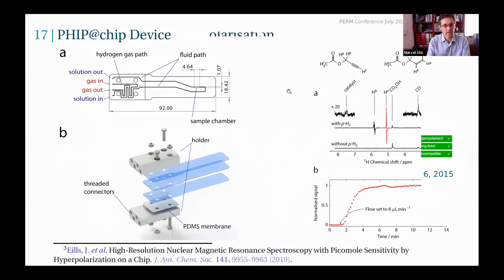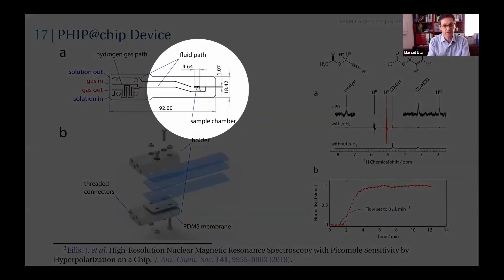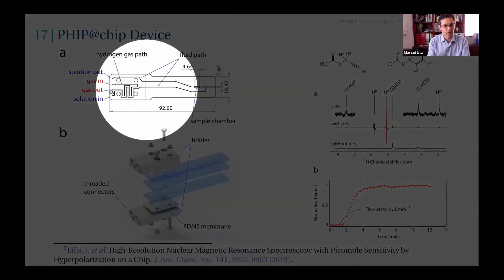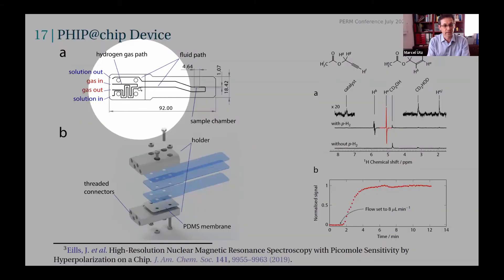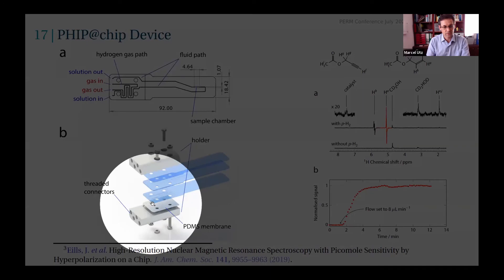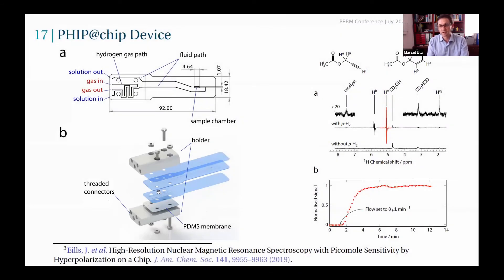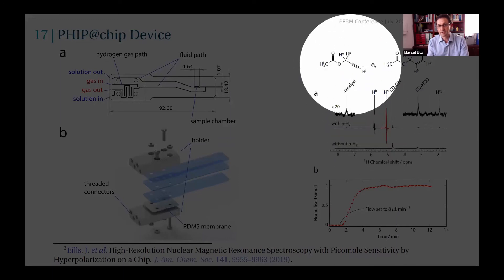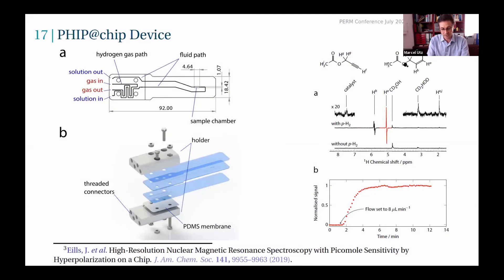In view of that, we have built this microfluidic device where again we have a two-and-a-half-microliter sample chamber in the middle. But now we flow a mixture of a solution of the precursor and the catalyst in methanol through this channel, and we provide hydrogen gas in a parallel channel. The hydrogen gas then diffuses through a PDMS silicone membrane into the liquid channel where it reacts and produces the parahydrogen signal after reacting with the precursor to produce the double-bond molecule, allyl acetate.